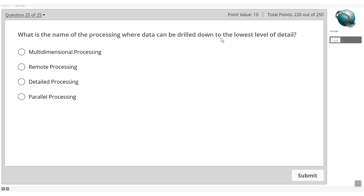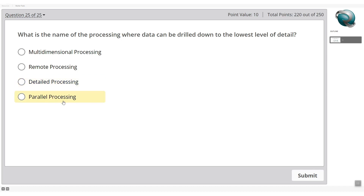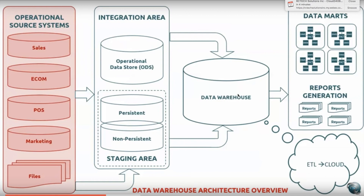What is the name of the processing where data can be drilled down to the lowest level of detail? Options are multi-dimensional processing, remote processing, detail processing, or parallel processing. Drill-down relates to multi-dimensional processing. Select option one and submit. That concludes Part 1 — if you enjoyed this video, please like and subscribe. See you in Part 2 of data warehouse architecture.